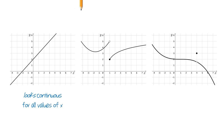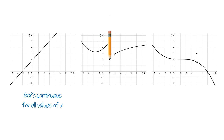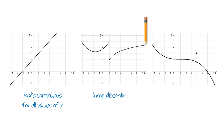For the second function, we can trace along the graph, and we have to pick up our pencil at x equals 1 and move it to a different part of the graph. So this looks like it's not continuous, and in particular, there is a jump discontinuity at x equals 1.